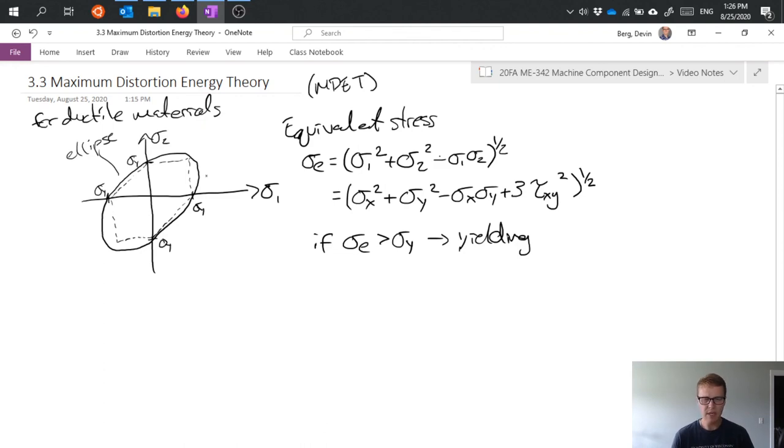The max shear stress theory is slightly more conservative than the max distortion energy theory. You can see it's smaller—the inside area is smaller than the area of the ellipse—and that means that it's going to predict failure more frequently than the max distortion energy theory. So the max distortion energy theory is more accurate than the max shear stress theory, but the max shear stress theory is more conservative, meaning it'll predict failure more often. Max distortion energy theory is more accurate, and that's the basic criteria that we would use for ductile materials.